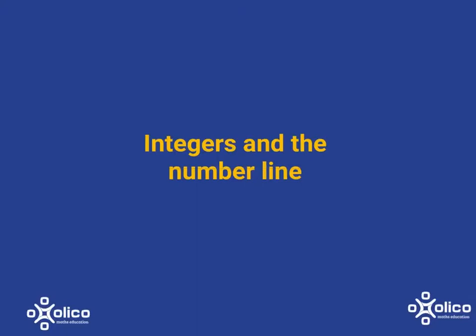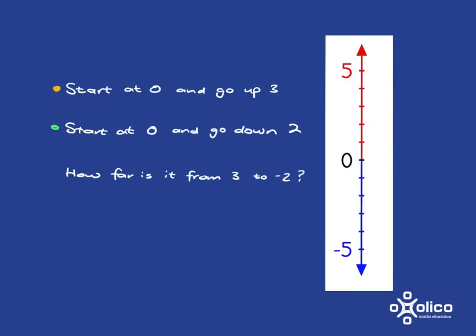We're going to play around with integers and the number line. Let's look at some distances and numbers on the number line. If I ask you to start at zero and go up by three steps, where do you end up? 1, 2, 3 — you end up over here at 3, which is the number 3 on the number line. So starting at zero and walking up three steps ends you up at number 3 on the number line.